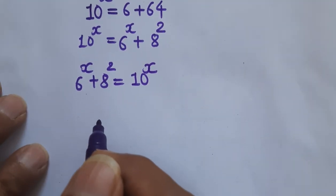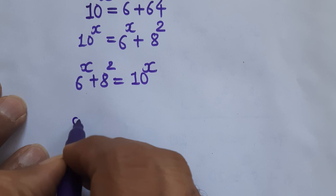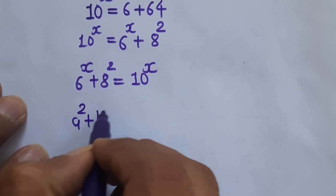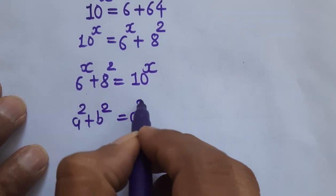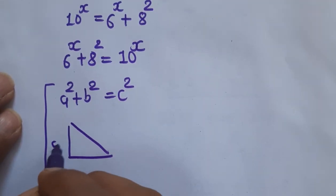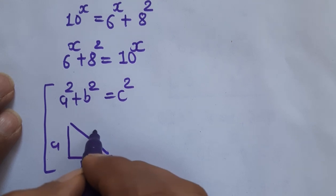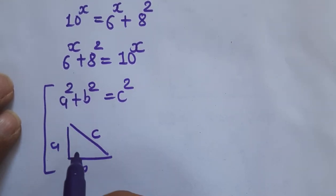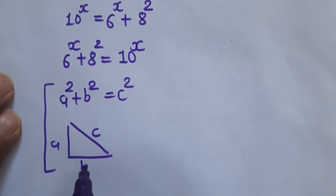So according to Pythagoras theorem, the equation is a square plus b square is equal to c square. So according to Pythagoras theorem, this side is a, this side is b, this side is c. So here c square is equal to a square plus b square.